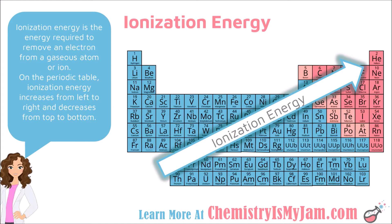Atoms on the left side of the periodic table will normally give away electrons when they become ions. That makes sense because they have low ionization energies — it does not take much energy to remove those electrons. So ionization energy increases from left to right and increases from bottom to top.